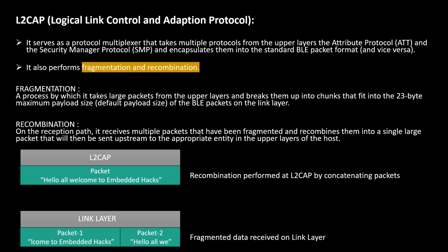Fragmentation is the process of taking a large packet from the upper layer, breaking it up into chunks that fit the maximum payload size of the BLE packet at the link layer. Recombination does the reverse: it takes multiple received packets, recombines them into a single large packet, and passes it upstream to the upper layer. For example, two packets of maximum length 23 bytes each are received at the link layer as fragmented data; L2CAP recombines these into a single large packet and sends the data to the upper layer.